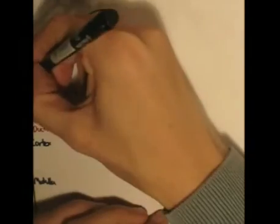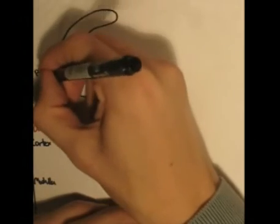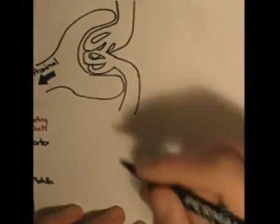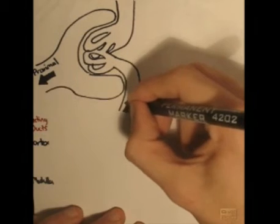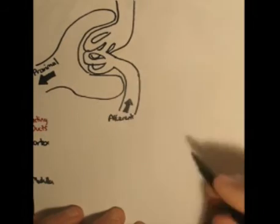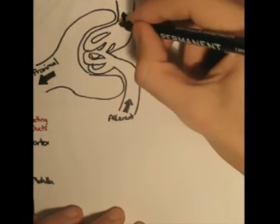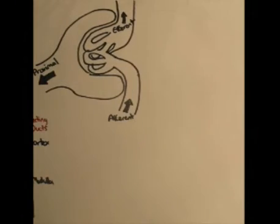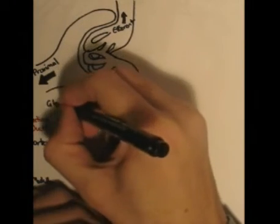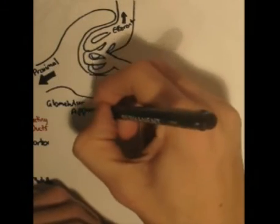So here we have the Bowman's capsule going towards the proximal tubule. And coming in and out are the arterioles. The one coming in is called the afferent arteriole, and the one coming out is the efferent. Now this section here is called the glomerular apparatus.